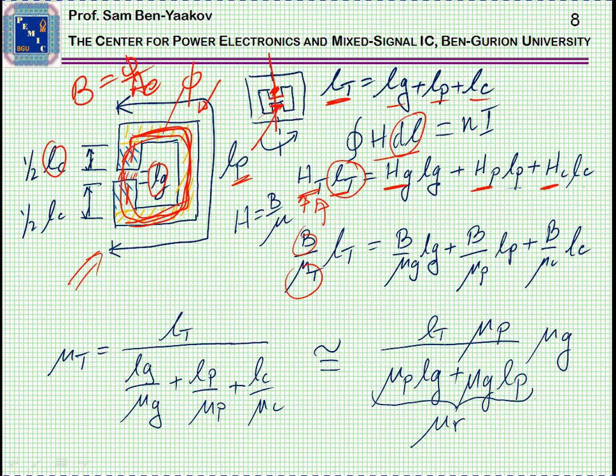What we are doing is we are going to represent the equivalent magnetic field by B over μt, and μt is the equivalent total permeability. Then, similarly, we are going to do it for all the three sections. With some further manipulation, I am getting this expression.